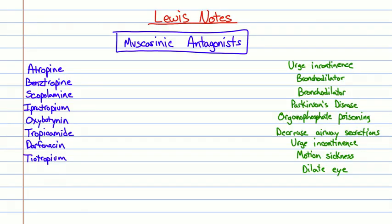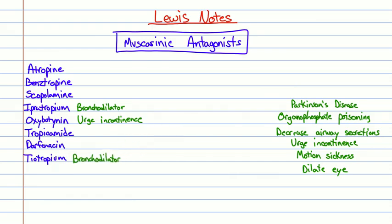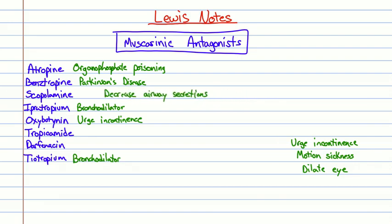Welcome to Lewis Notes. We're looking at our muscarinic antagonists and doing a matching game — putting clinical uses to each drug. Urge incontinence goes with oxybutynin. Bronchodilator goes with ipratropium and tiotropium — they have similar endings so they're easy to remember. Parkinson's disease is benztropine. Organophosphate poisoning is atropine — also remember pralidoxime. Decreased airway secretions is scopolamine, which you might use in an ICU patient with excess secretions.